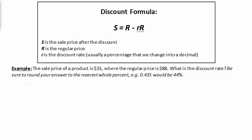So let's go ahead and use our formula. S is the sale price. The sale price of the product was $33. R is the regular price, which is $88. And r is the discount rate, which we don't know and we need to find.